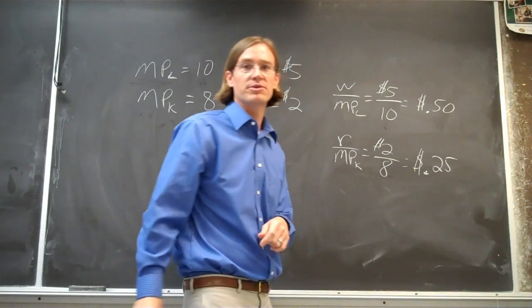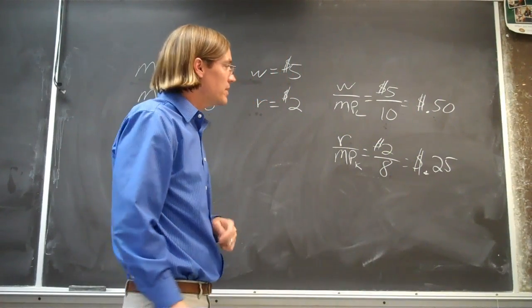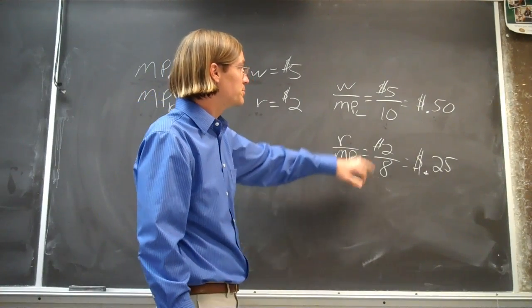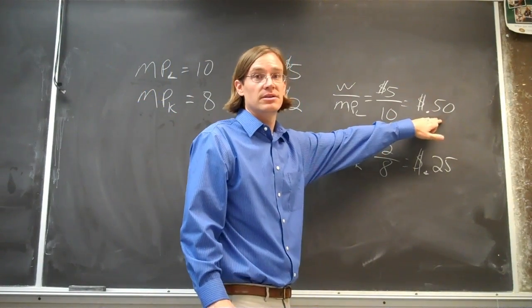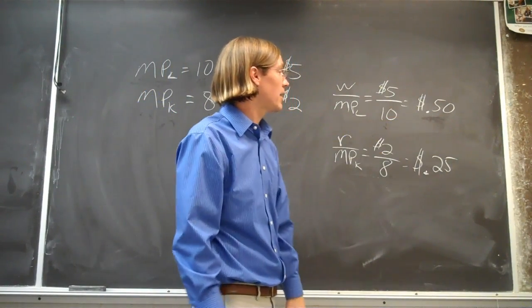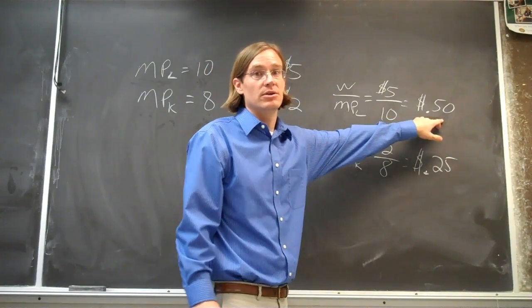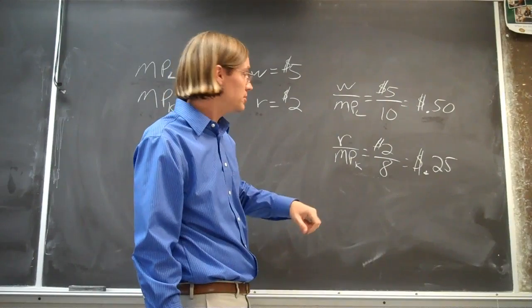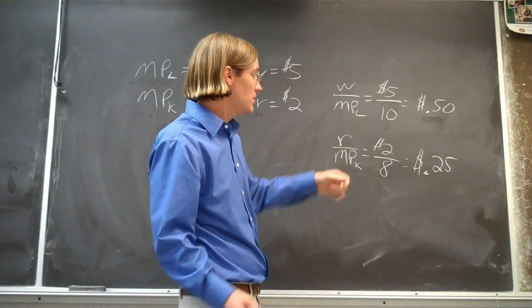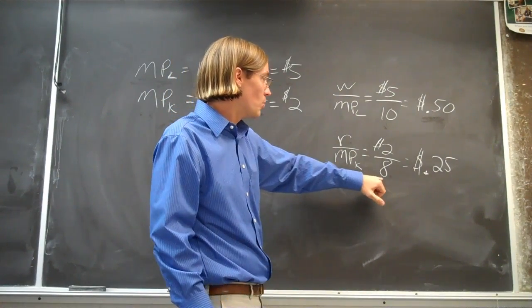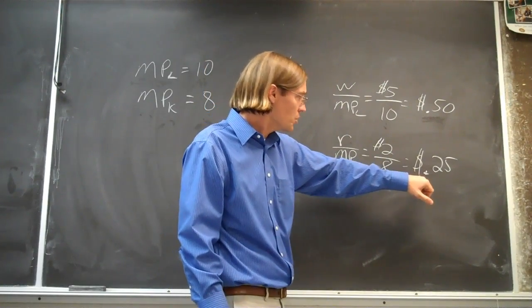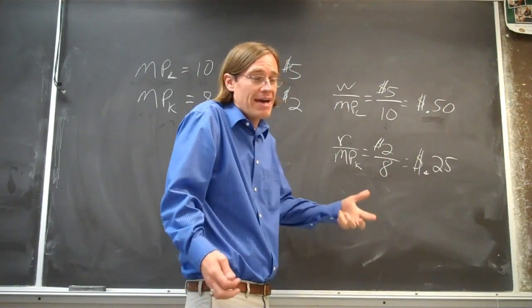So where's the better deal? If you're getting a unit of output, that last unit, and you spent 50 cents to get that last unit of output, not quite as good a deal hiring that worker as you got for the last unit of capital that you used. The last unit of capital, you added that and you got that eighth unit. The eighth unit of output only cost you 25 cents, half as much.